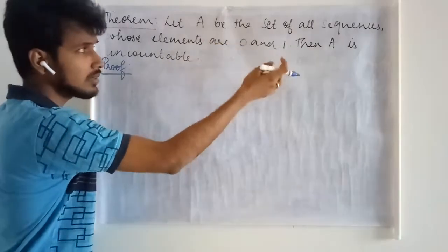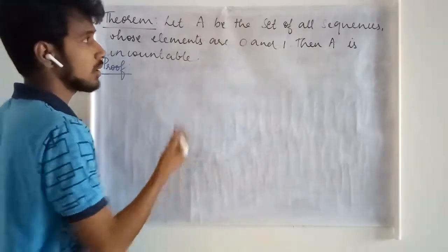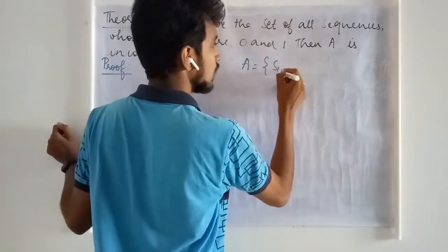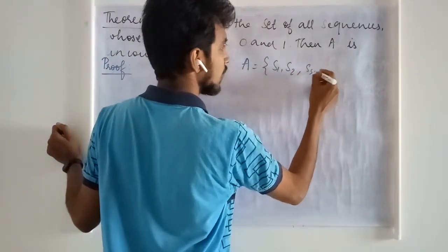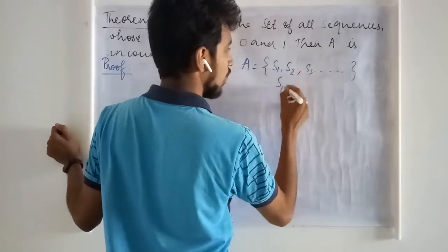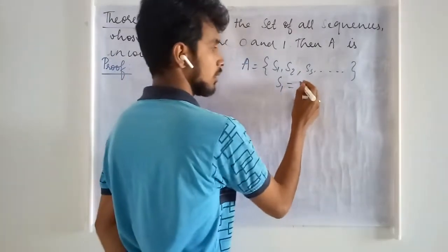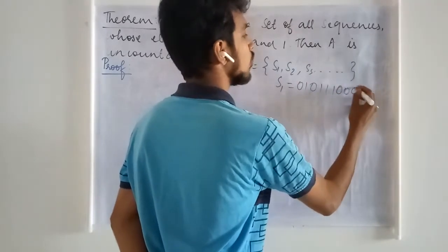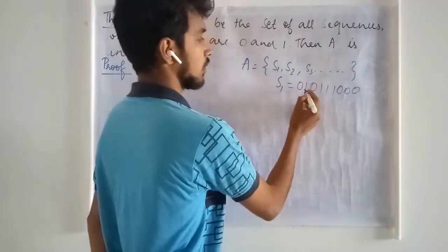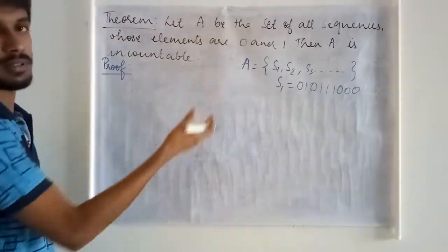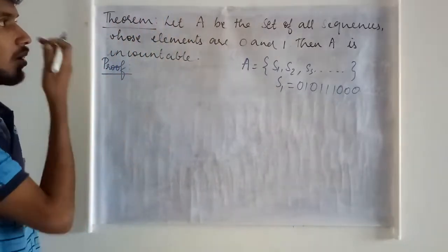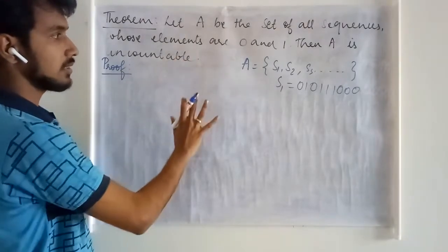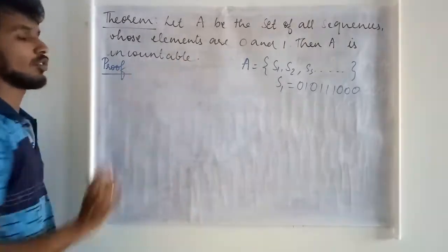Sequences whose elements are 0s and 1s — suppose A is going to consist of sequences like this. If you write the first term, it may be 0, 1, 0, 1, 1, 0, 0, 0 — these are the elements in the sequences.